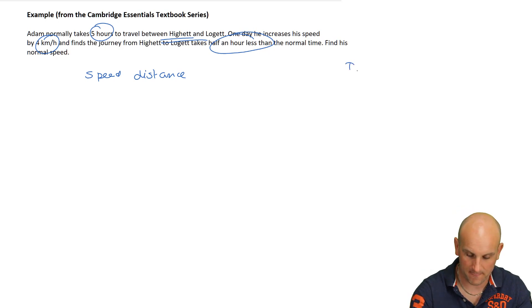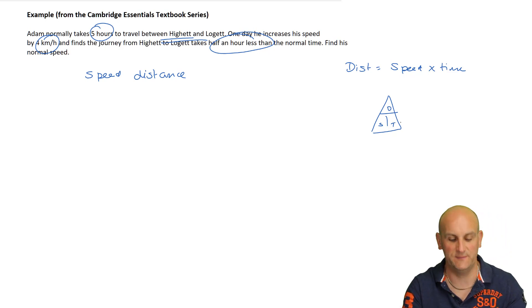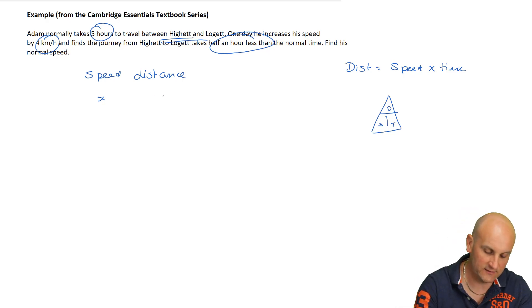Going back to a bit of physics and science, we know we're looking at speed and distance. How do I know? Because it's talking about travel between two places and a journey. If he's going between Hyatt and Logitt, the distances are going to be the same. How do I find distance given speed and time? We know that distance equals speed times time. The question hasn't told me the speed. We're going to call speed X.